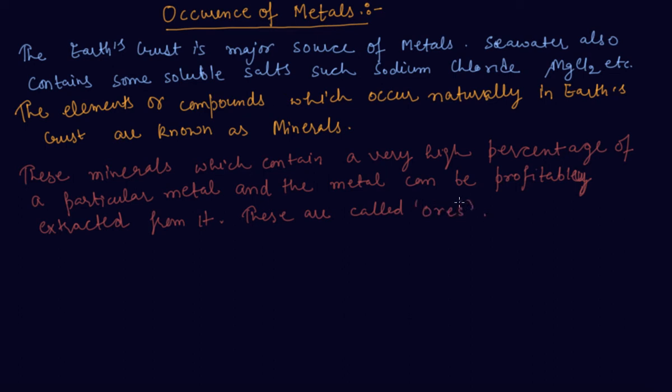Now we will see how do we extract metals. Some metals are found in the earth's crust in the free state and some are found in their compounds. The metals at the bottom of the activity series are less reactive.